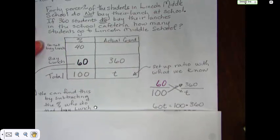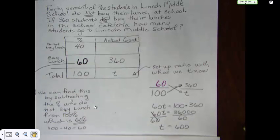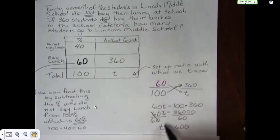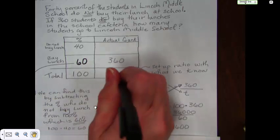And that gives us enough to set up the ratio because we know 60 over 100 equals 360 over t. And we can go ahead and solve. And this is our method for finding 60. We can go ahead and solve 60t equals 100 times 360. And so our total ends up to be 600.